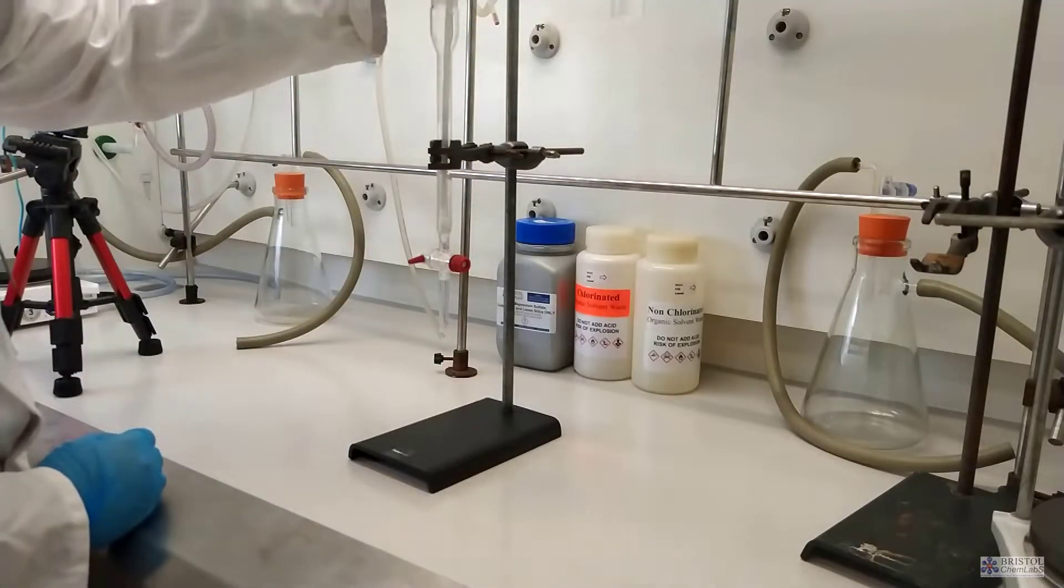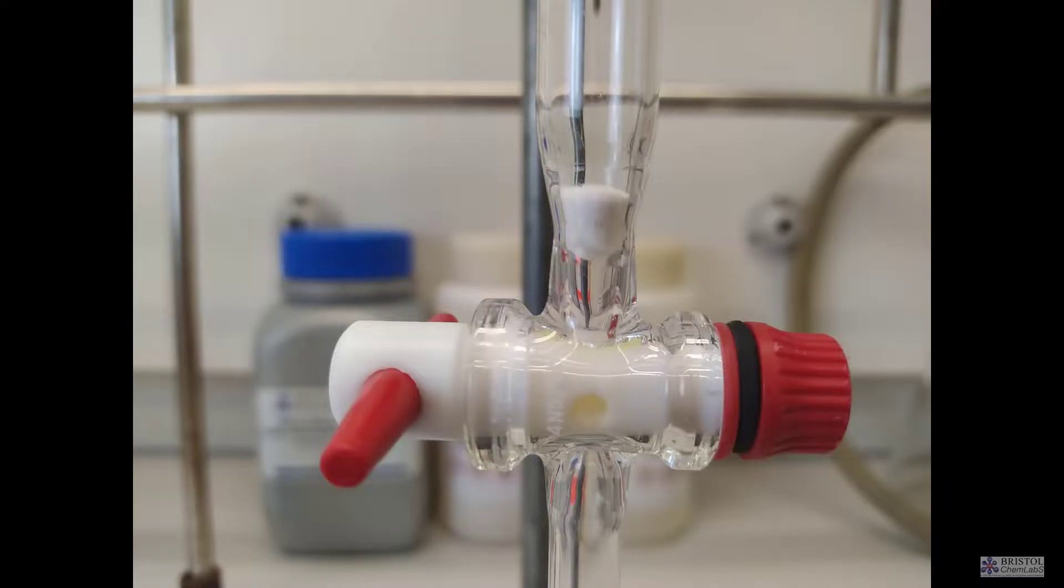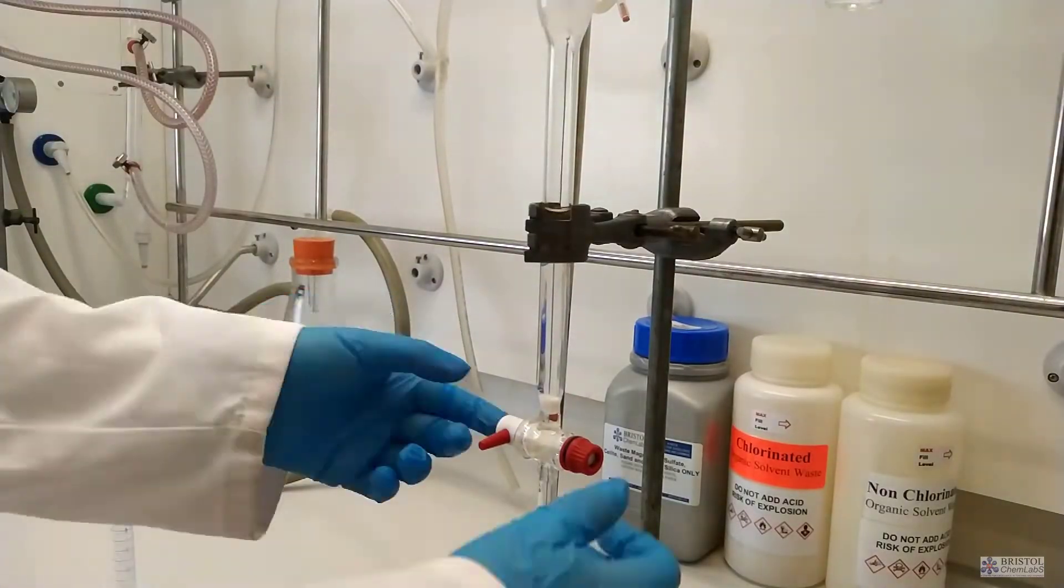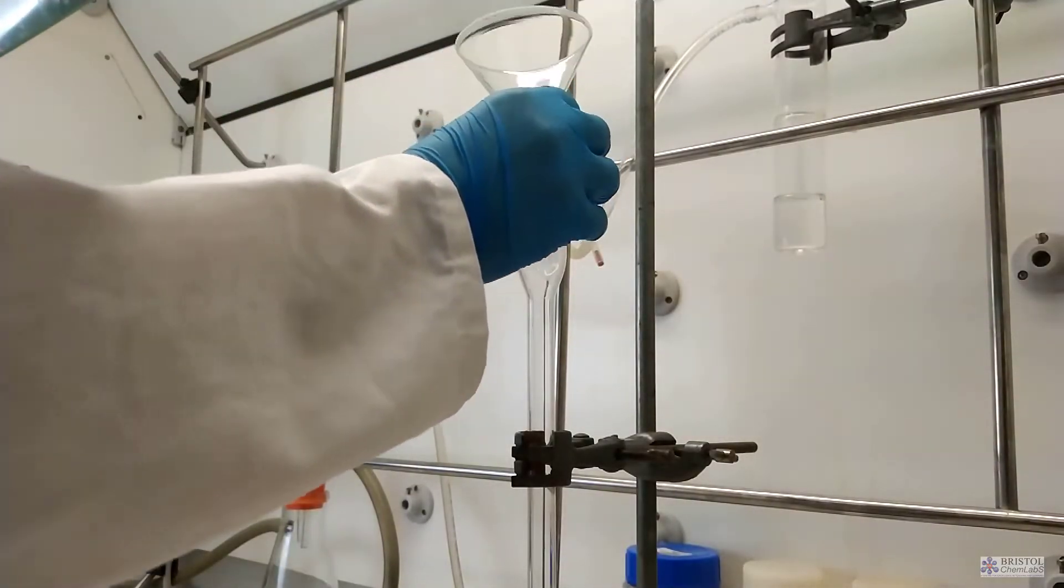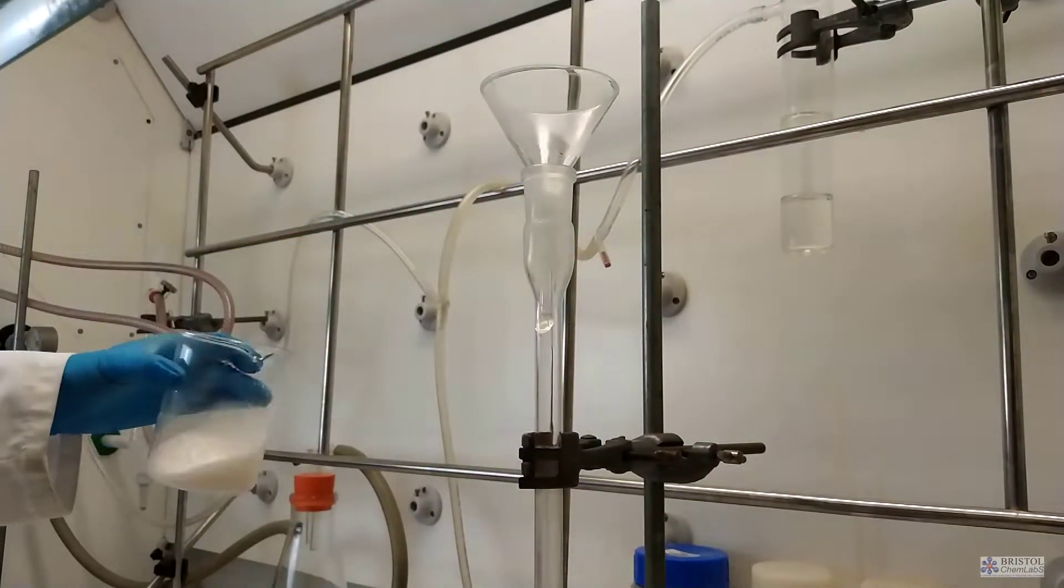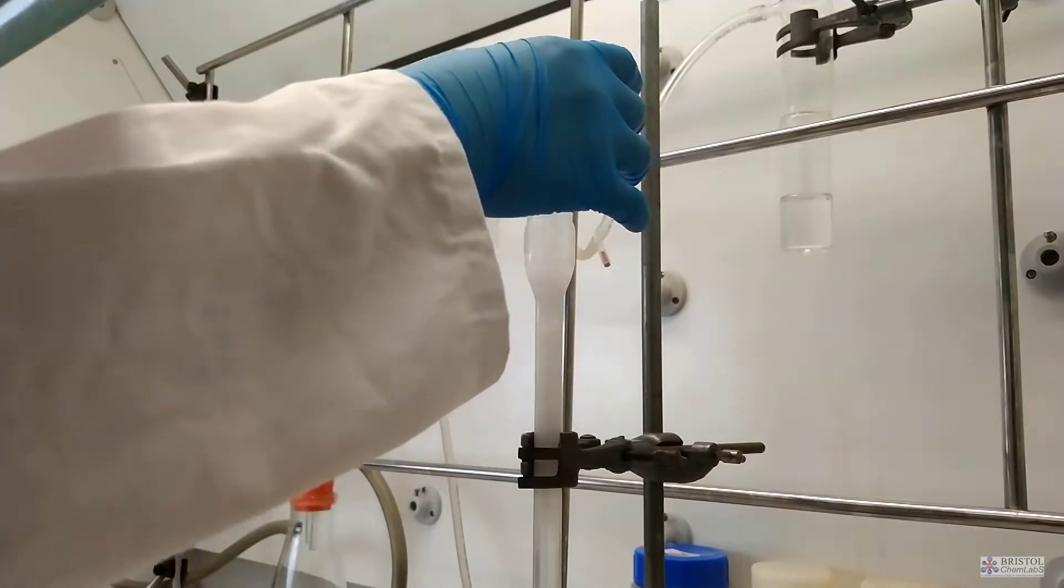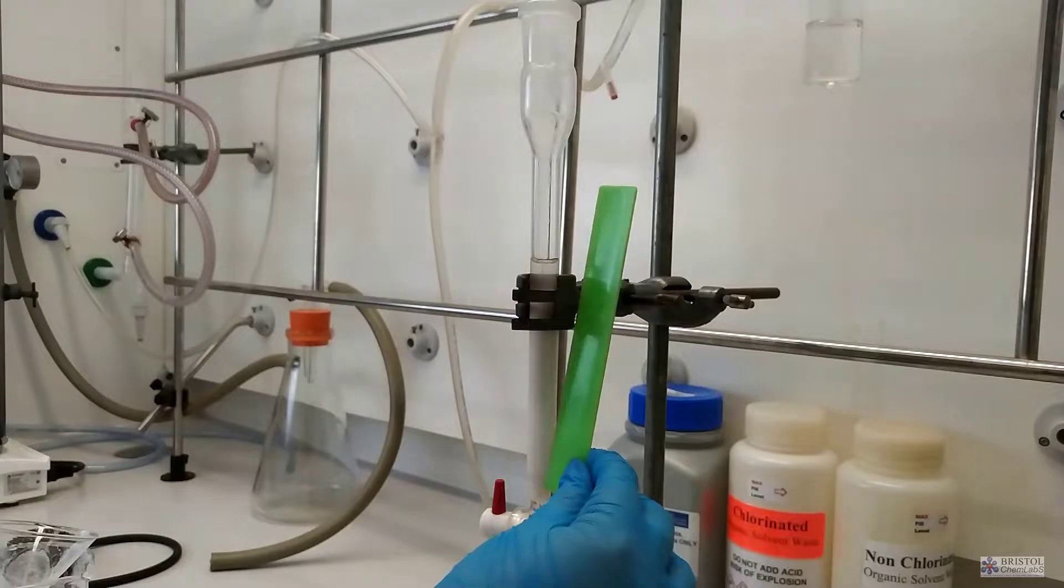Some glass wool or cotton wool is placed at the bottom of the column, and hot water is passed through this to remove any air trapped within the cotton wool or glass wool. Next, we pour in the slurry of alumina to the desired height. Always ensure that there is some solution above the alumina in preparing the column.